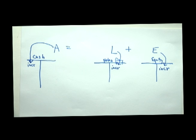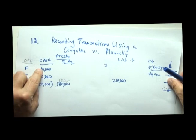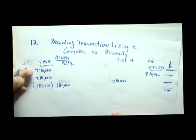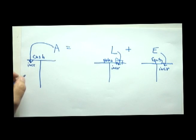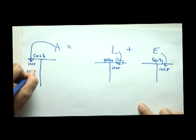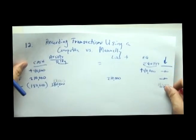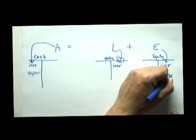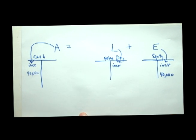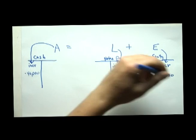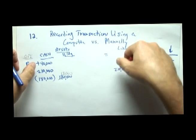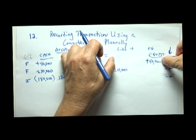Now, in our example that we used to record the owner putting in $40,000 to start the business, since cash increased here and since equity increased, the increase in cash of $40,000 would go on the left. Since equity went up $40,000 and it increased, it migrates in the right. So using a manual two-column system, increases in assets go on the left, increases in liabilities on the right.